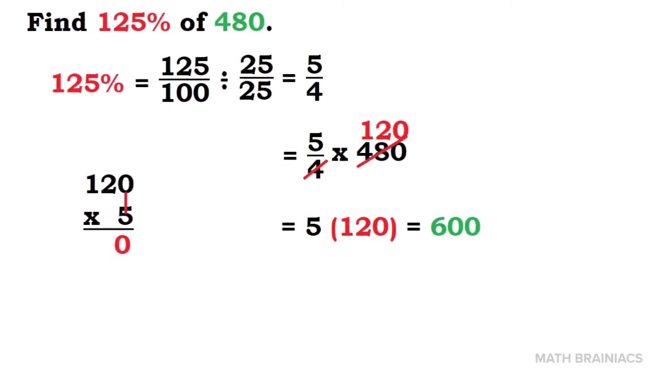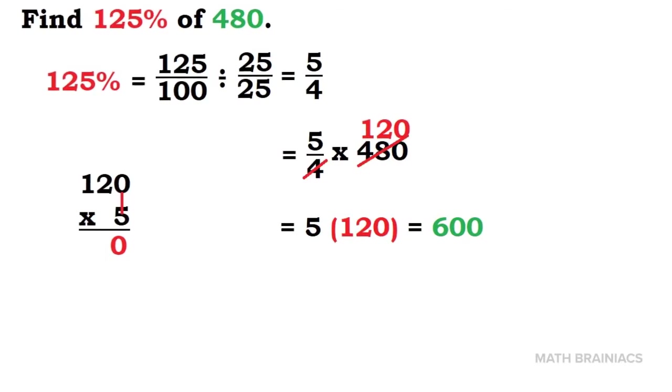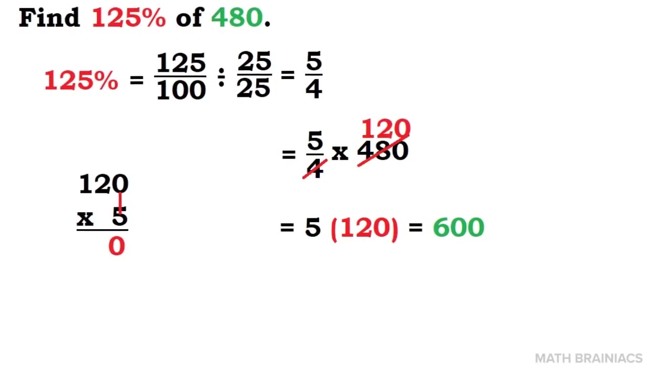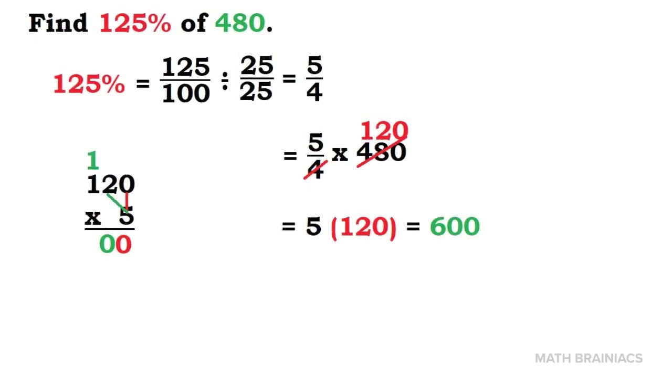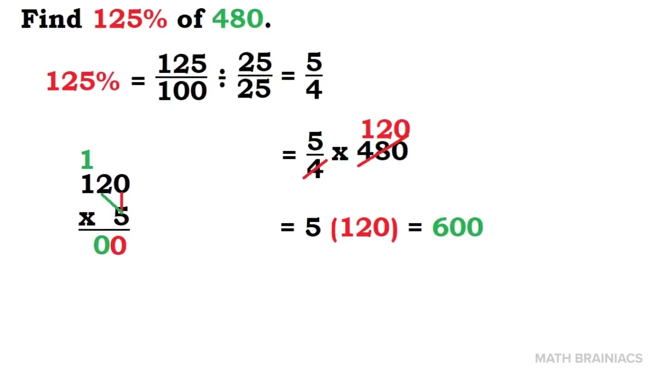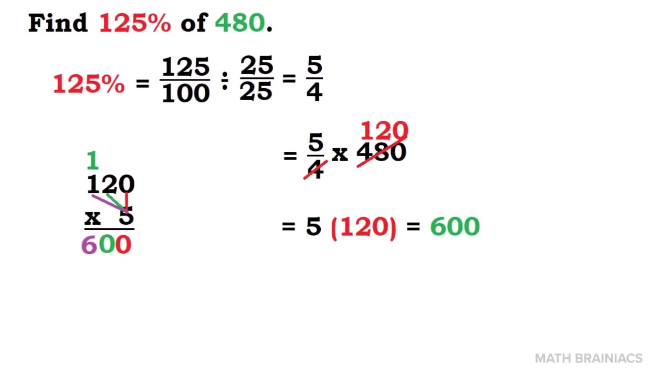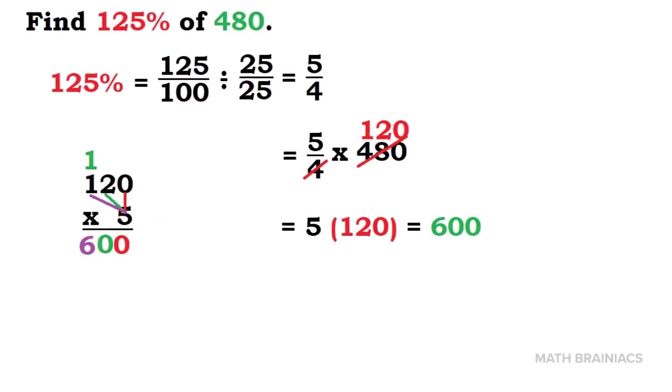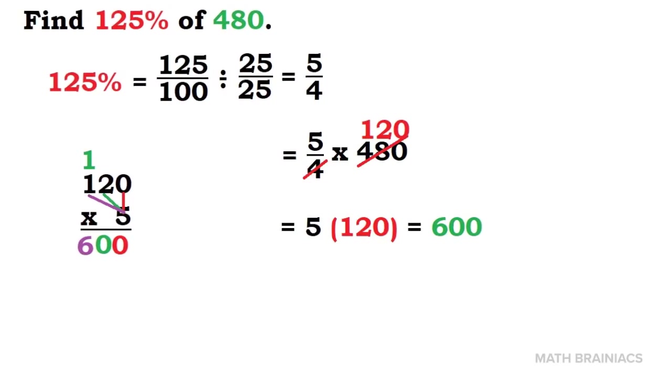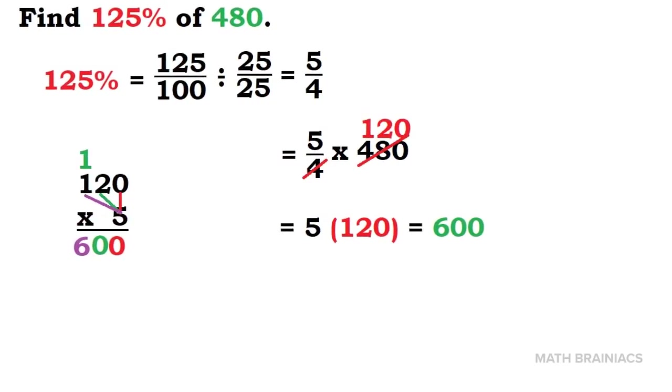To show you the longhand multiplication of 120 by 5, let us work on this. 5 times 0 is 0. 5 times 2 is 10. Bring down the 0 and carry over the 1 on the 100's place. Finally, 5 times 1 is 5, plus 1 on the carried over number, it will give us 6. Accordingly, 120 times 5 is 600.